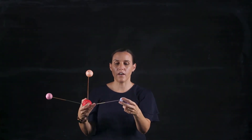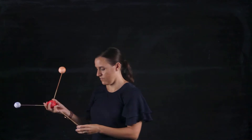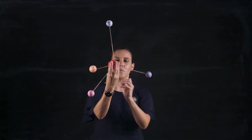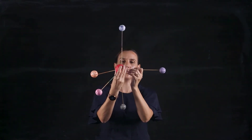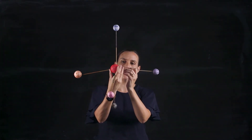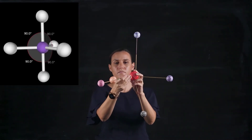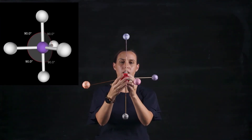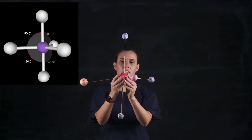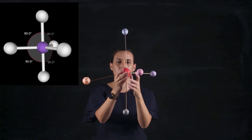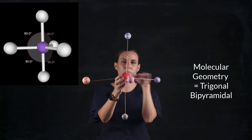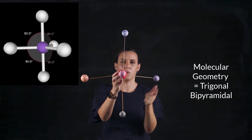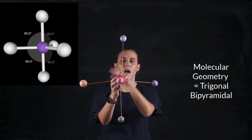If we bring in five groups — bringing in another one, put it in the bottom, and then these ones will go more to the center. So this is one, two, three — trigonal — they're all in the same plane, and it's bipyramidal, with a pyramid going up and a pyramid going down. So: trigonal bipyramidal.